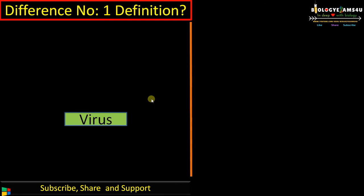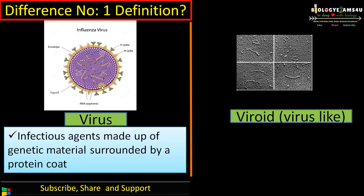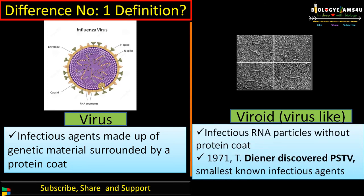Now moving into the differences. Viruses are infectious agents made up of genetic material that is surrounded by a protein coat. Here you can see the genetic material surrounded by a protein coat. Whereas viroids are infectious RNA particles without a protein coat. Viroids were discovered by T. Diener in 1971; the first discovered was PSTV, or potato spindle tuber viroid, and he called it viroid, meaning virus-like. Viroids are the smallest known infectious agents.